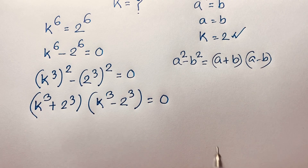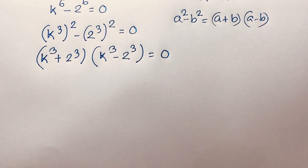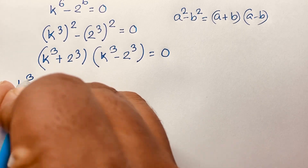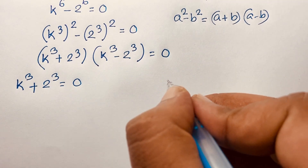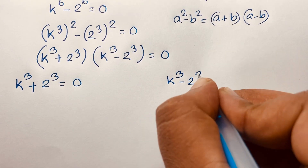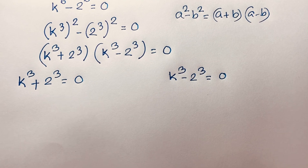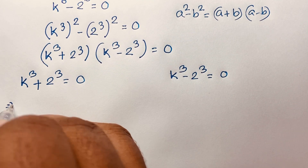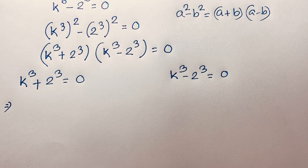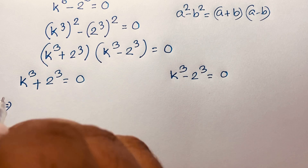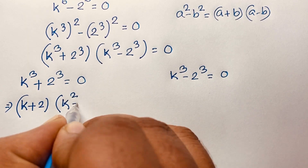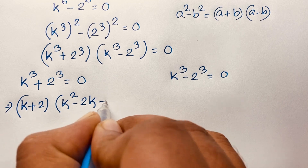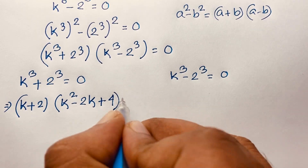So we find two cases. Our first case: k to the power 3 plus 2 to the power 3 is equal to 0. Using the sum of cubes identity — a cubed plus b cubed equals (a + b)(a squared minus ab plus b squared) — it becomes: (k + 2)(k squared minus 2k plus 4) is equal to 0.